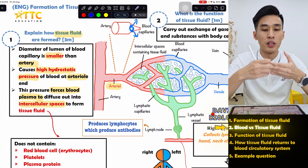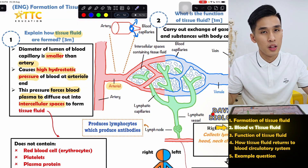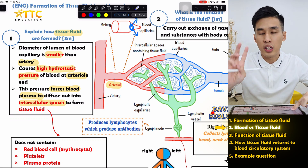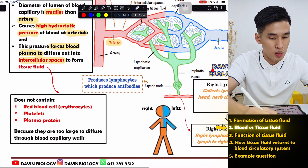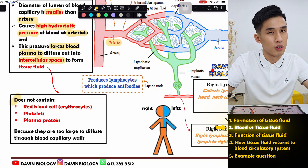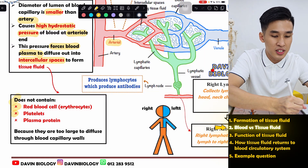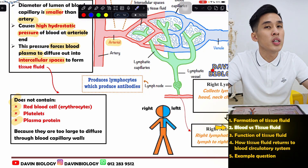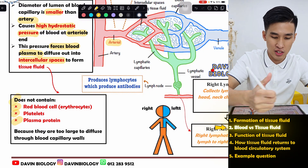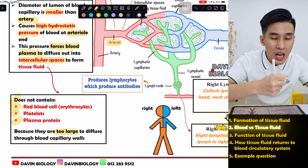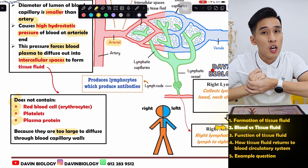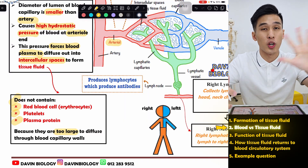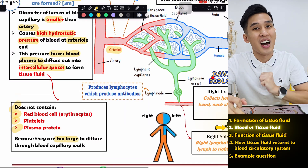Why is it called tissue fluid? Why, when the blood comes out, don't we call it blood anymore? It's because not everything in the blood comes out. There are three things that mainly cannot come out: tissue fluid does not contain red blood cells, platelets, and plasma proteins. They are too large to diffuse through the blood capillary walls. So whatever comes out won't have red blood cells, and it becomes colorless — not blood anymore.